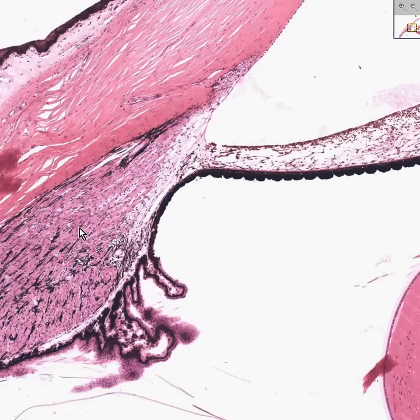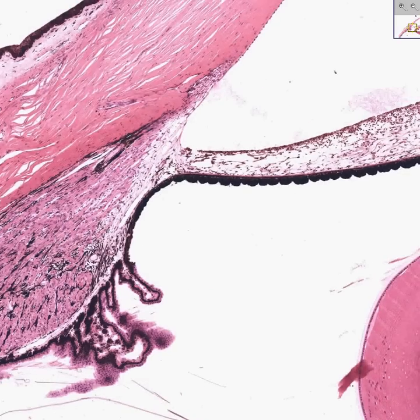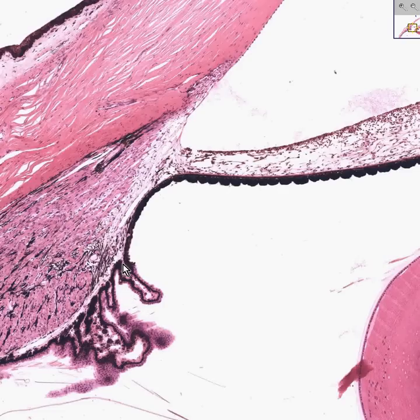Notice that there is this layer of epithelium, which extends all the way from the retina coming up through the ciliary body, all the way to the posterior portion of the iris. And this is called RPE for retinal pigmented epithelium.